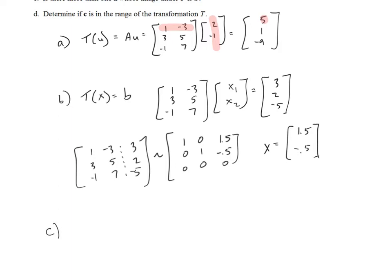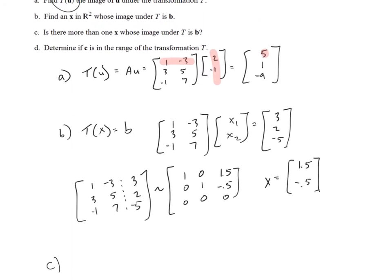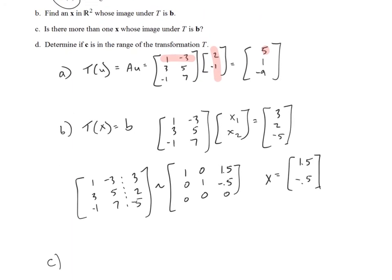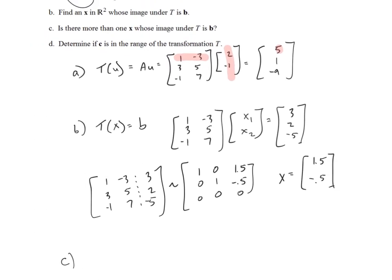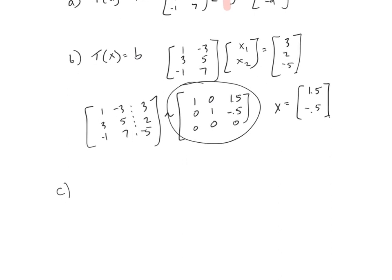Now, let's answer part C. Let me scroll up so you can see it again. Is there more than one X whose image under T is B? The answer to that is no, exactly 1. Even though we have a row of zeros, each variable has a solution. X1 has a value, X2 has a value. There are no free variables. So row of zeros doesn't automatically mean a free variable. The answer to that is no, exactly 1 vector. Not more than 1.